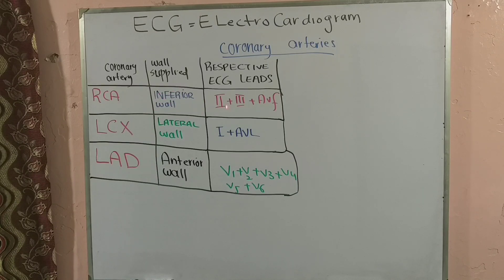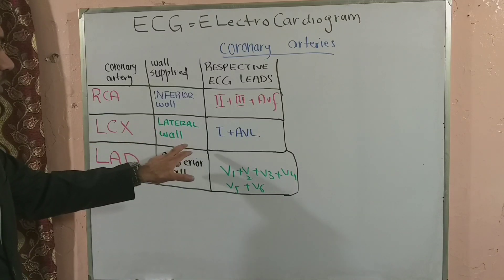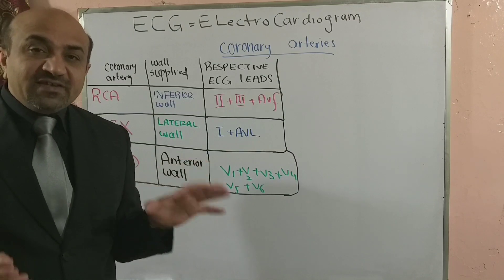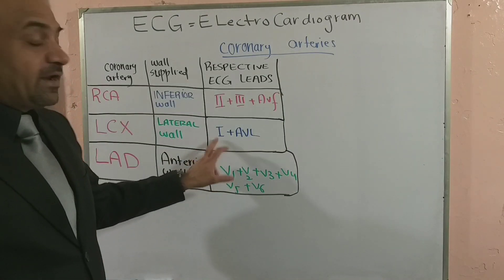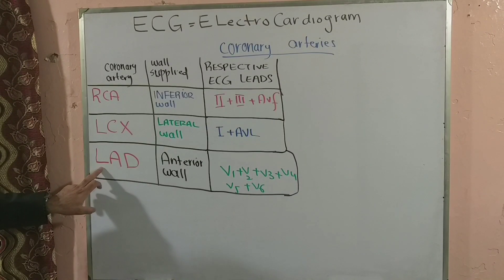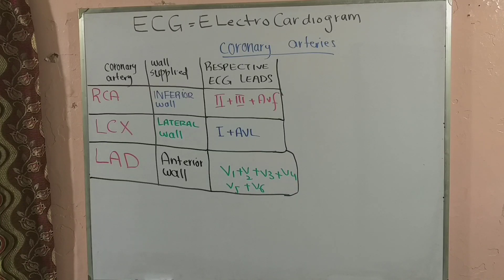For example, the right coronary artery supplies the inferior wall, and that inferior wall on the ECG paper is represented by leads II, III, and aVF. The left circumflex artery, which supplies the lateral wall, is represented by leads I and aVL in combination. The left anterior descending artery supplies the anterior wall, and that anterior wall is represented by the chest leads V1 through V6.